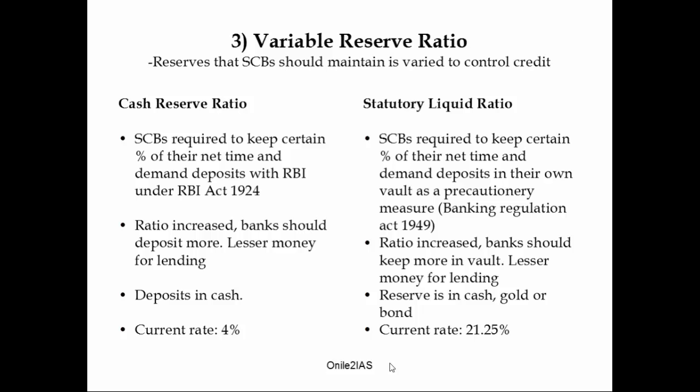Then let's look at statutory liquidity ratio. This is the percentage of deposits that scheduled banks are supposed to keep with themselves in their vault. It is a precautionary measure so that banks don't lend beyond their capacity, according to the Banking Regulation Act. To control inflation, RBI increases this percentage, so banks keep more money in their vault, leaving them with lesser money to lend. This reduces money supply in the economy. Note that SLR can be in cash, gold or bonds. The current rate of SLR is 21.25%.